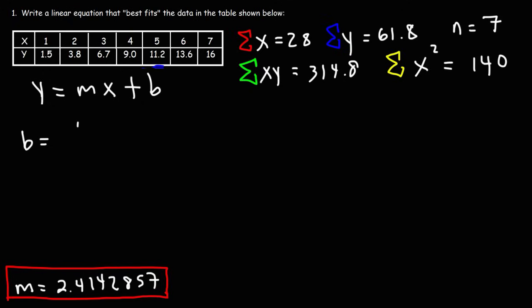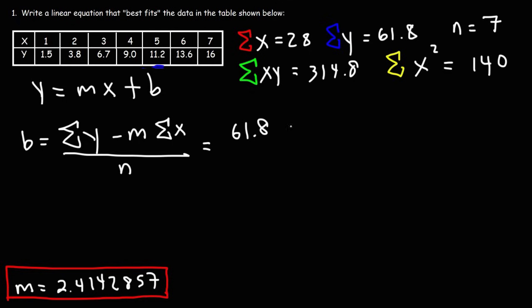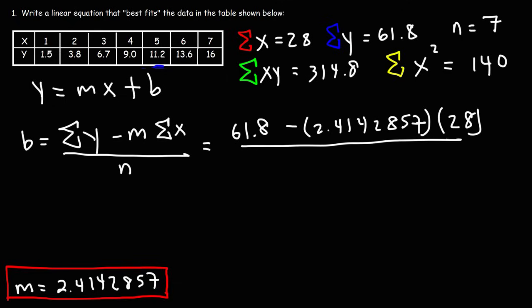Now let's calculate the y-intercept b using the formula: b = (Σy − m·Σx) / n. So: (61.8 − 2.4142857×28) / 7 ≈ −5.8 / 7 ≈ −0.828571. I'm using the most accurate m value to avoid rounding error in b.